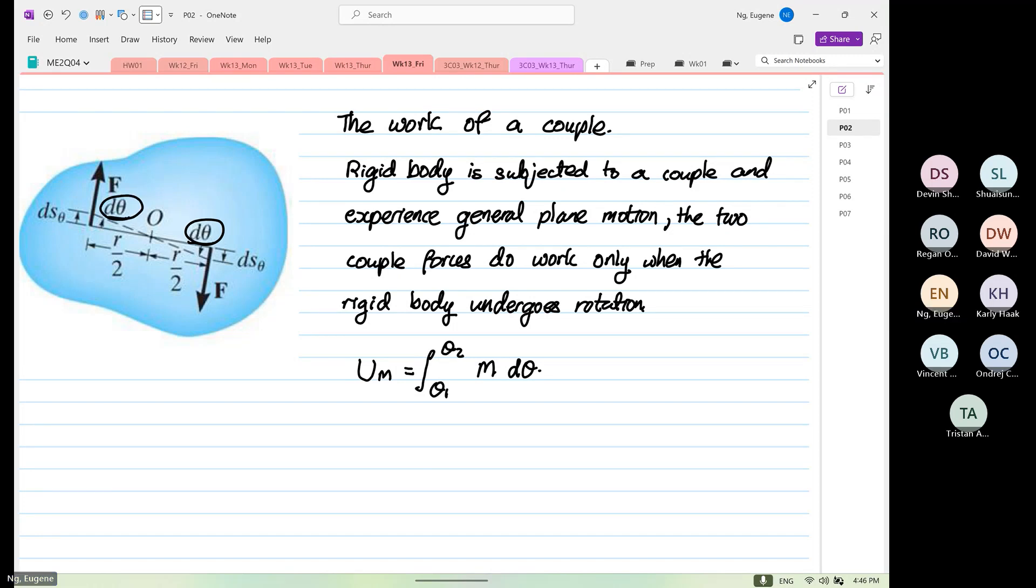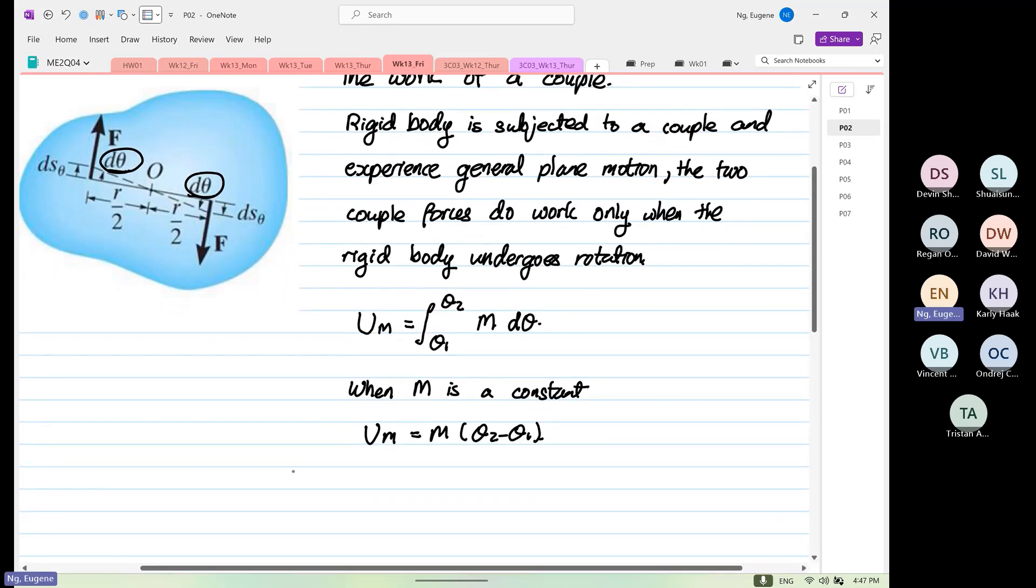So if or when M is constant, so M do not change with the angle, then U_M will be equal to M times theta 2 minus theta 1. So the work of U_M is positive when theta 2 is greater than theta 1 and both are positive.